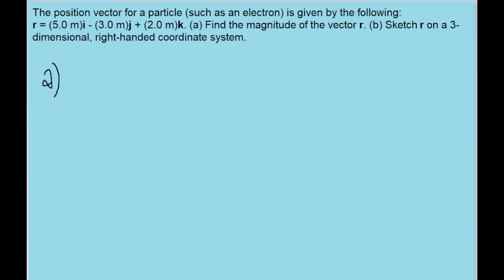The first part of the problem asks us to find the magnitude of the vector. This is fairly easy to do. To find the magnitude of the vector, all we need to do is take the square root of the sum of the squares of every single component.